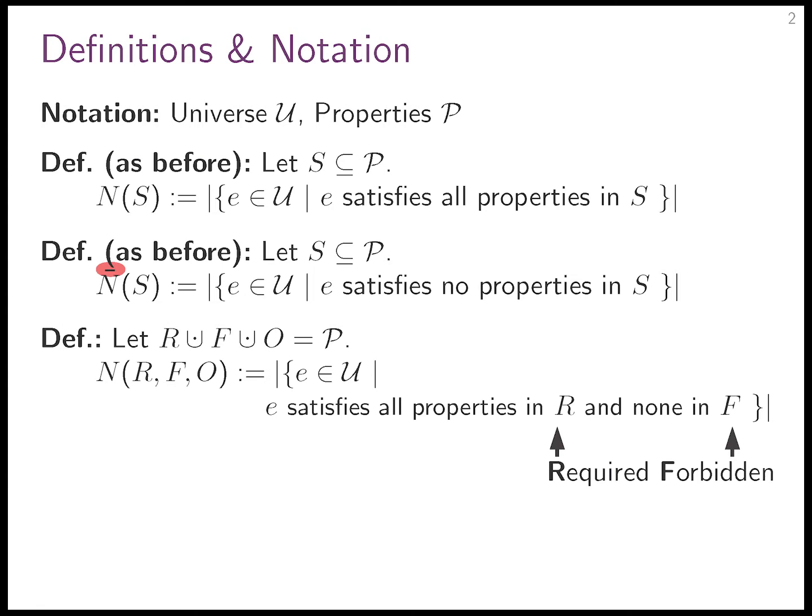We'll call them R, F, and O — that stands for required, forbidden, and optional. N(R, F, O) is the cardinality of the set of all elements in the universe such that element E satisfies all of the properties in R and none of the properties in F. You'll notice that O doesn't appear in this definition, and that's precisely because the elements in O are optional — we don't actually care if they are true or not. Required needs to be true, forbidden needs to be not true, and O we don't care about.